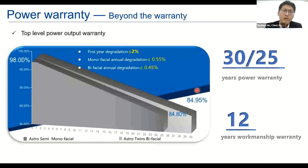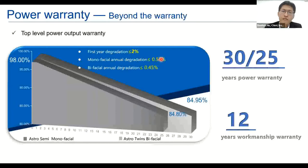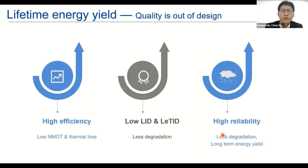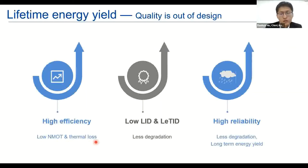Based on our design and testing, we have confidence to provide top-level power warranty: less than 2% in the first year. For bifacial, the annual degradation warranty is 0.45%, and for monofacial it is 0.55%. We provide a 12-year product warranty. Quality comes from design. Based on our design and test results, the lifetime energy yield can be increased significantly — high efficiency results in lower temperature coefficient loss, and lower LID and LETID effects increase end-of-life yield. Module reliability is the most critical factor for lifetime energy yield.